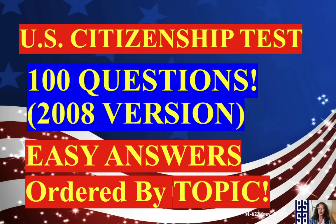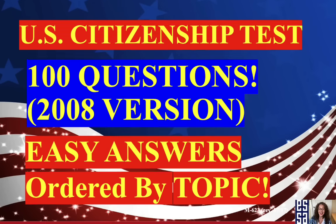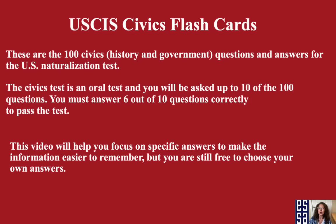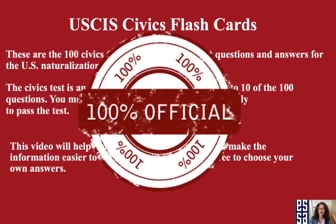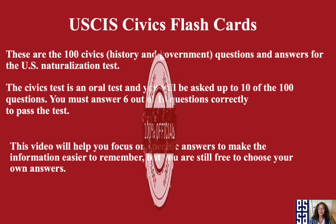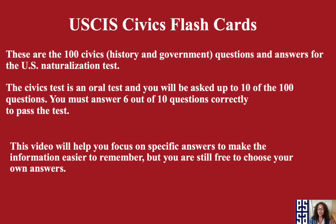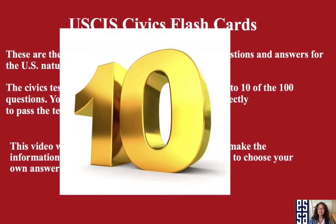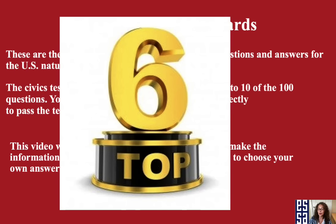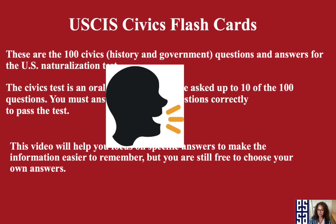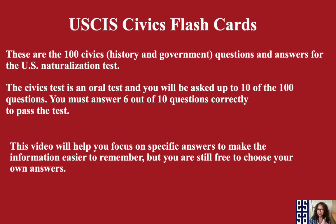Please remember that you are free to choose your own answers. A little bit about the rules: these are the 100 official civics questions, the 2008 version from USCIS. You will be asked 10 randomly chosen questions and must get 6 of those 10 correct in order to pass. Please know that this is an oral test, so it's not multiple choice. Be careful if you study that way. You only need to provide one answer unless the question specifically asks for more than one.